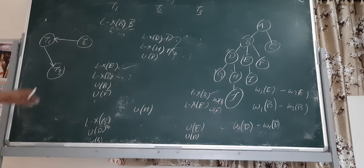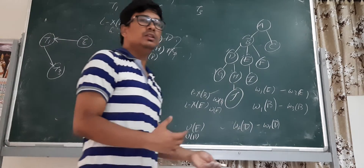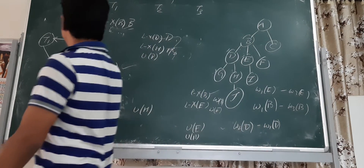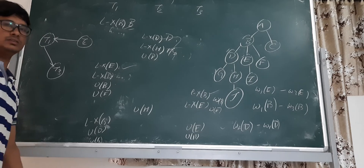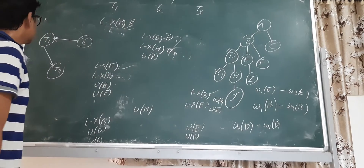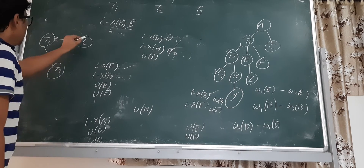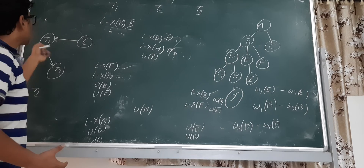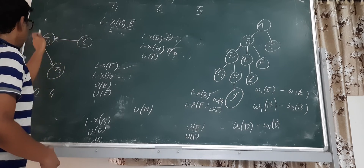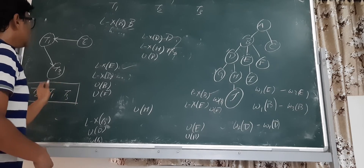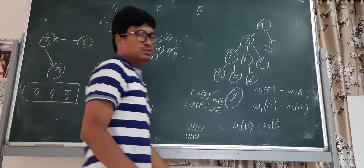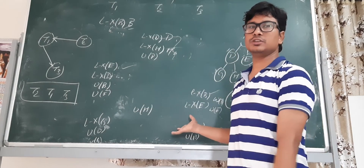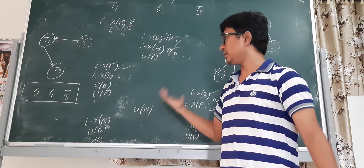Now we check whether any cycles are present in the polygraph. If there are cycles, then there is no equivalent serial schedule for the given schedule. But in this polygraph there are no cycles. So some serial schedule is available. Starting from T2, we go to T1, then to T3. So the equivalent serial schedule is T2 → T1 → T3. Using the graph based protocol we can find serializability. I hope you have understood this example. I will give another example in the next video.